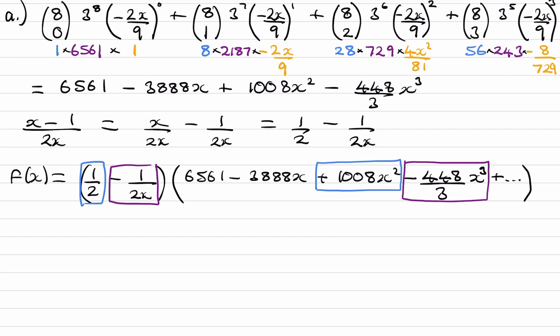So the blue stuff multiplied together would give us 504x². And then what we have in purple would give us 224/3.